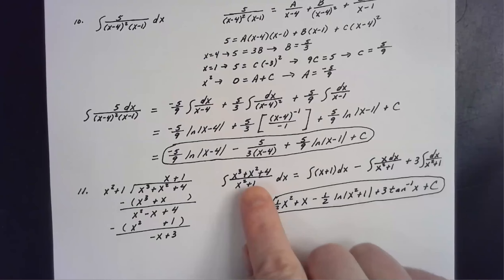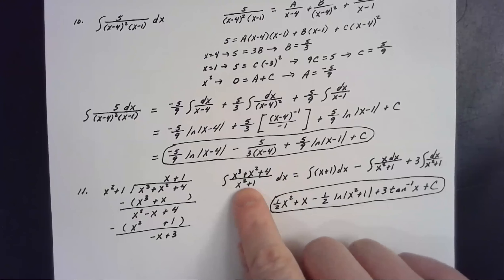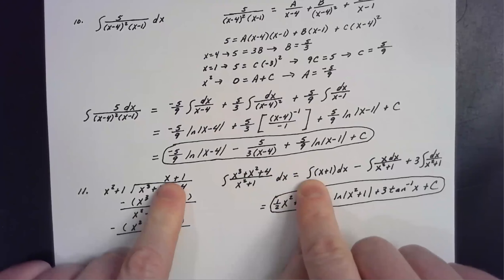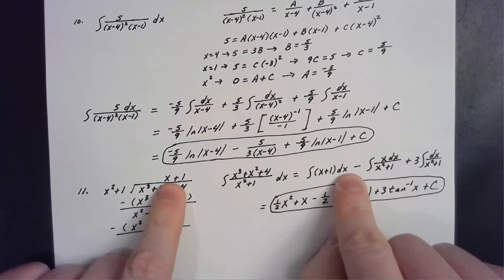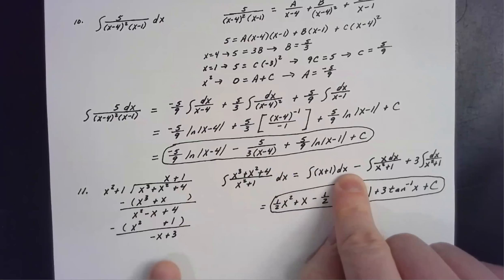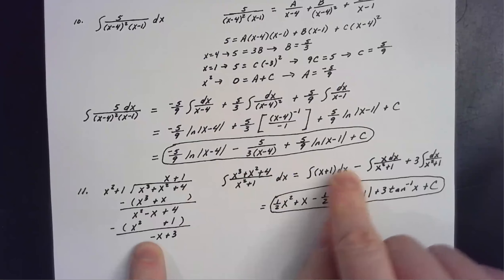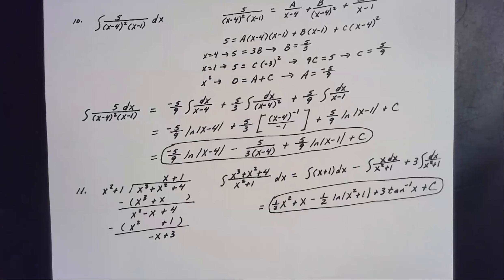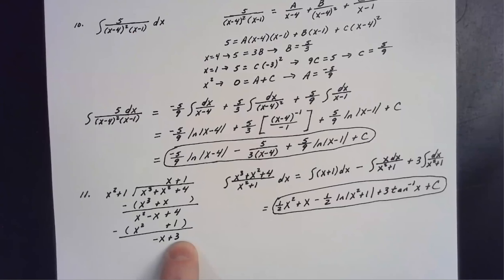So the original problem equals the integral of the part that divided evenly, which is (x + 1), with respect to x, plus the integral of (−x + 3) over (x² + 1). The numerator is already set up, so A = −1 and B = 3, with no further decomposition needed.